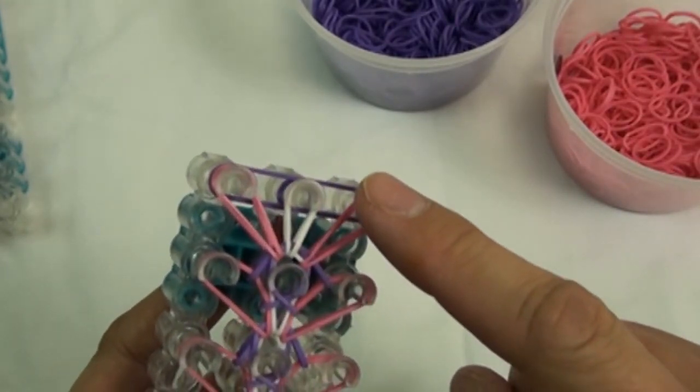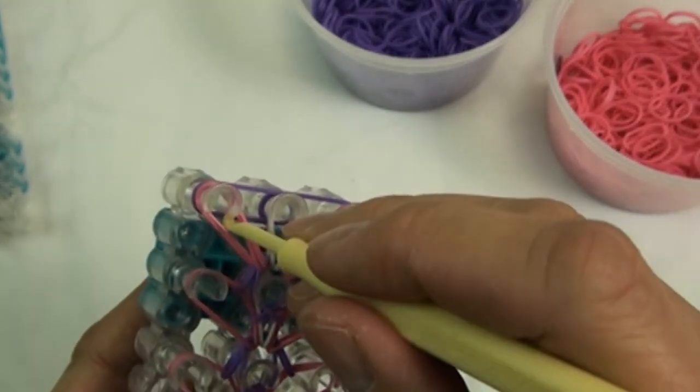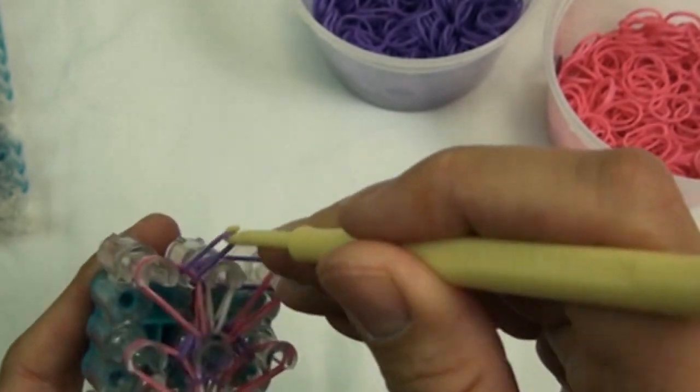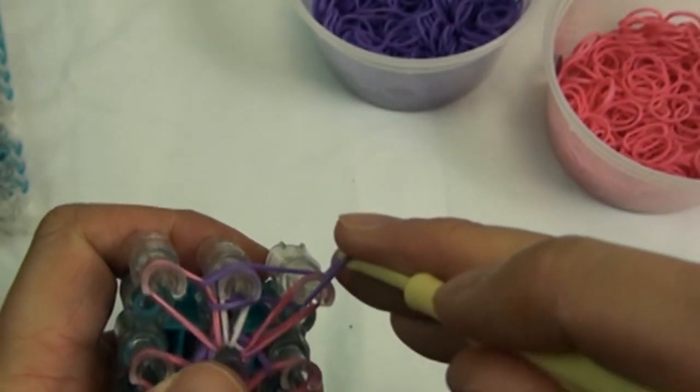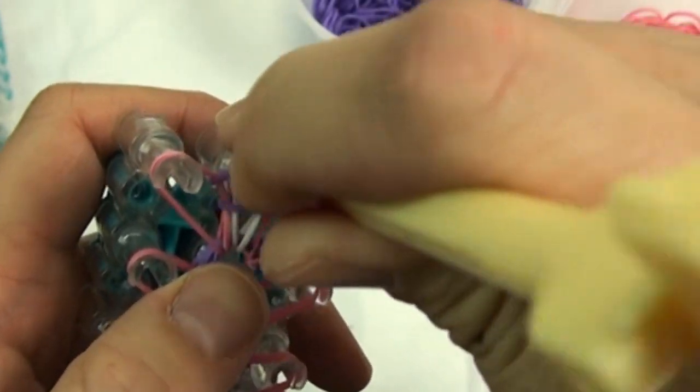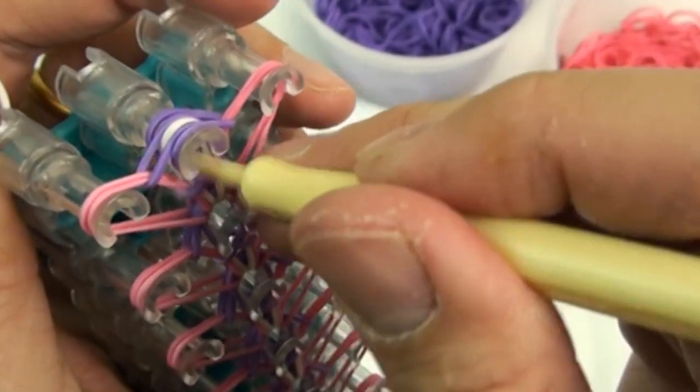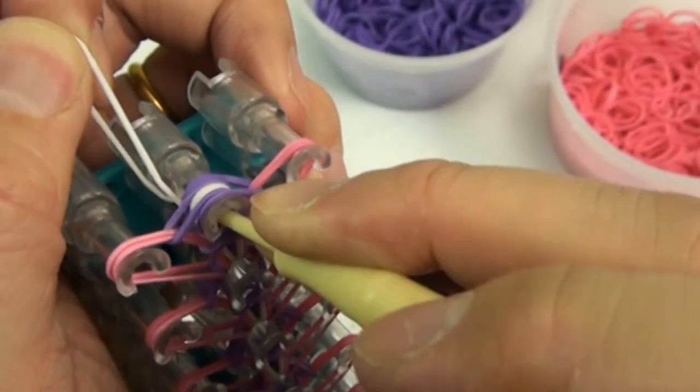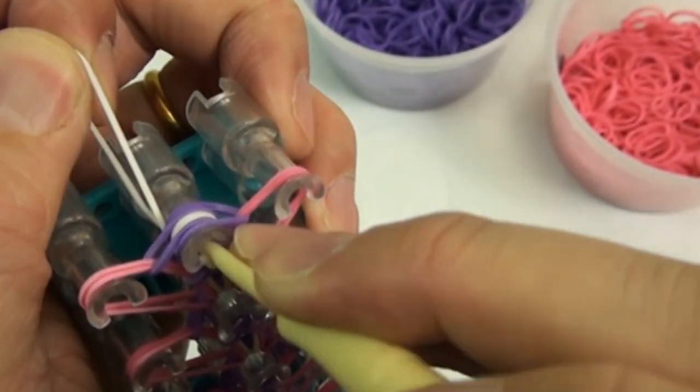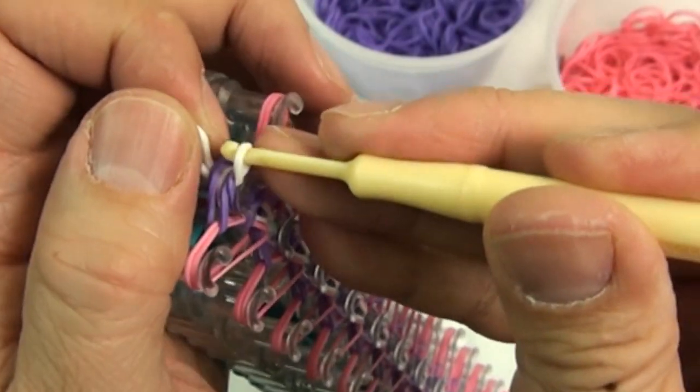On the last row of rubber bands, you will loop the purple rubber band over the center pin like that. Secure the last row band with an additional rubber band looping through it like this.